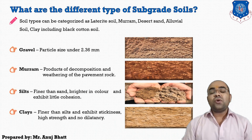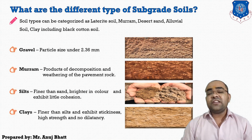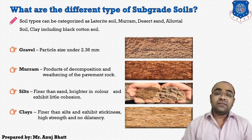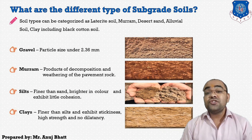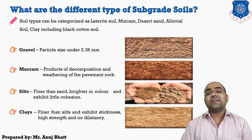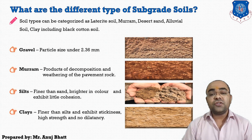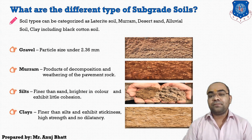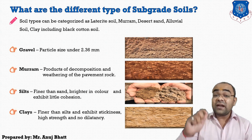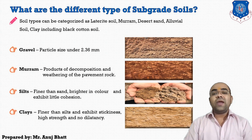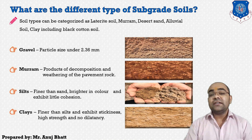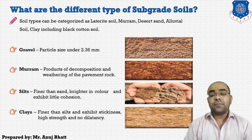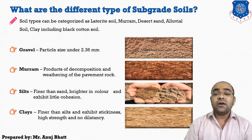The next is clay soil. Clay soils are finer than silts. Clay soils exhibit stickiness and high strength when dry, and show no dilatancy. Dilatancy is the volume change observed in granular materials when they are subjected to shear deformation. Generally, black cotton soil and other expansive clays exhibit swelling and shrinkage properties. When a paste of clay with water is rubbed between the fingers, it leaves a stain, which is not observed with silt. This is the difference between silt and clay. These are the general types of subgrade soils available when providing a subgrade.